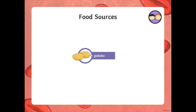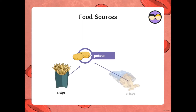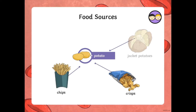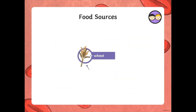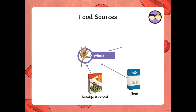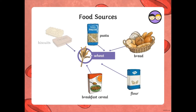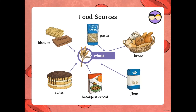Let's have a look at the potato. What different types of food can a potato make? Chips, crisps, jacket potatoes, mashed potatoes, roast potatoes. So there is the potato and the different types of food that a potato can be made into. Wheat can give us breakfast cereals, flour, bread, pasta, biscuits, and cakes.